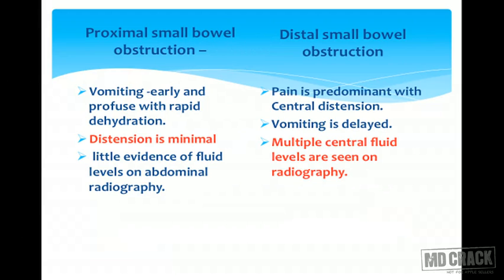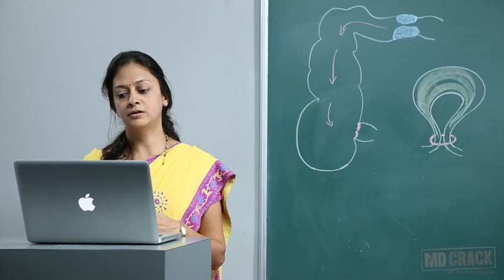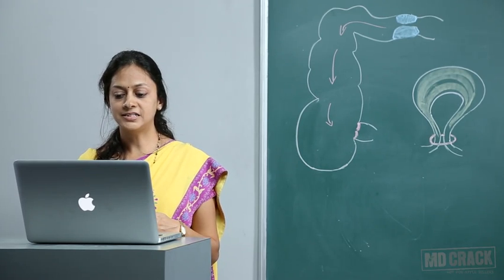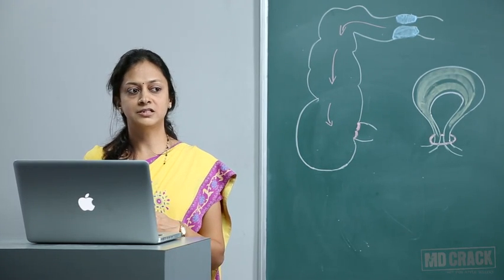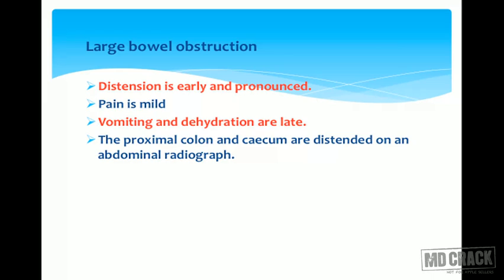In proximal small bowel obstruction, vomiting is early and profuse with rapid dehydration, distension is minimal, and very few fluid levels are seen on the abdominal radiograph. In distal small bowel obstruction, pain is predominant with central distension, vomiting is delayed, and multiple central fluid levels are seen on the radiograph. In large bowel obstruction, distension is early and pronounced, pain is mild, vomiting and dehydration are late, and the proximal colon and cecum are distended on X-ray.